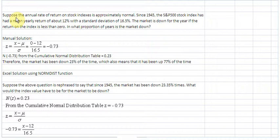Suppose the annual rate of return on stock indexes is approximately normal. Since 1945, the S&P 500 stock index has had a mean yearly return of about 12% with a standard deviation of 16.5%. The market is down for the year if the return on the index is less than zero. The question was, in what proportion of years is the market down?